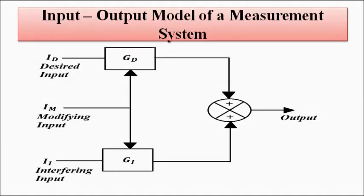Also, the input-output model of the measurement system has inputs divided into three types: first, the desired input — the signal we want to measure; then the modifying and interfering inputs — unwanted signal types which we cannot completely eliminate. We have to take them into consideration and figure out how to neutralize their effect, keeping them at a minimum level. Modifying and interfering inputs will affect the accuracy and precision value of the instrument.